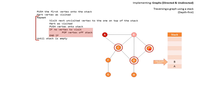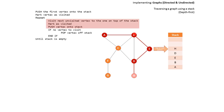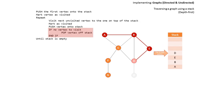So we're going to go down to E. Following our logic, we go around this loop again and again — we visit E and push it on, then D, then H. Now, at H, we see there are no vertices left to visit; we can't go anywhere else from H. So we pop H off the stack, and the stack pointer is now pointing at D.